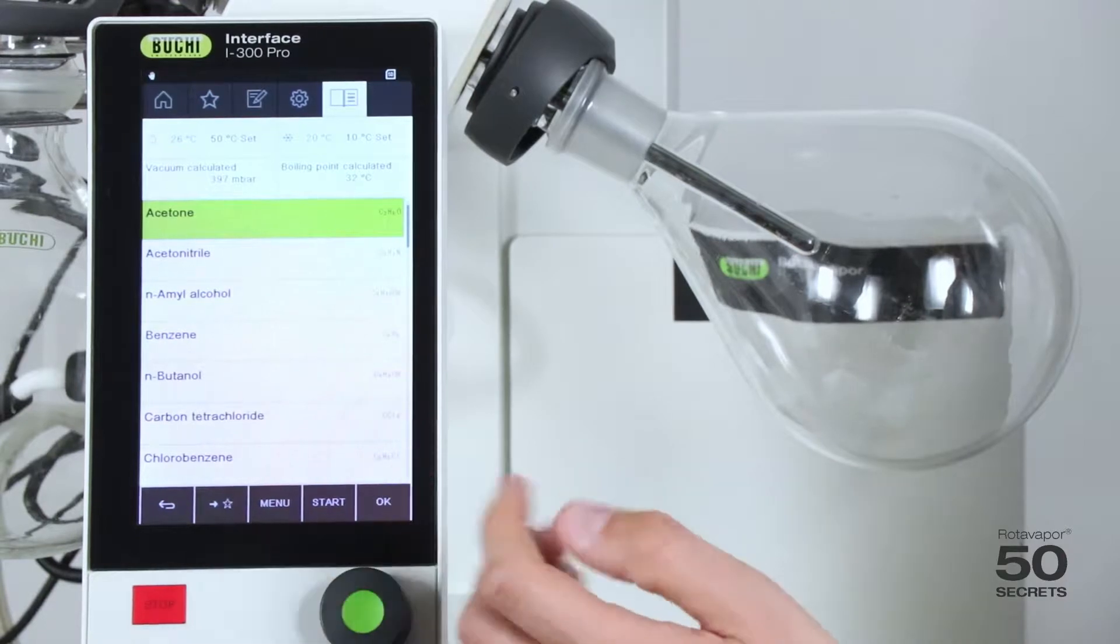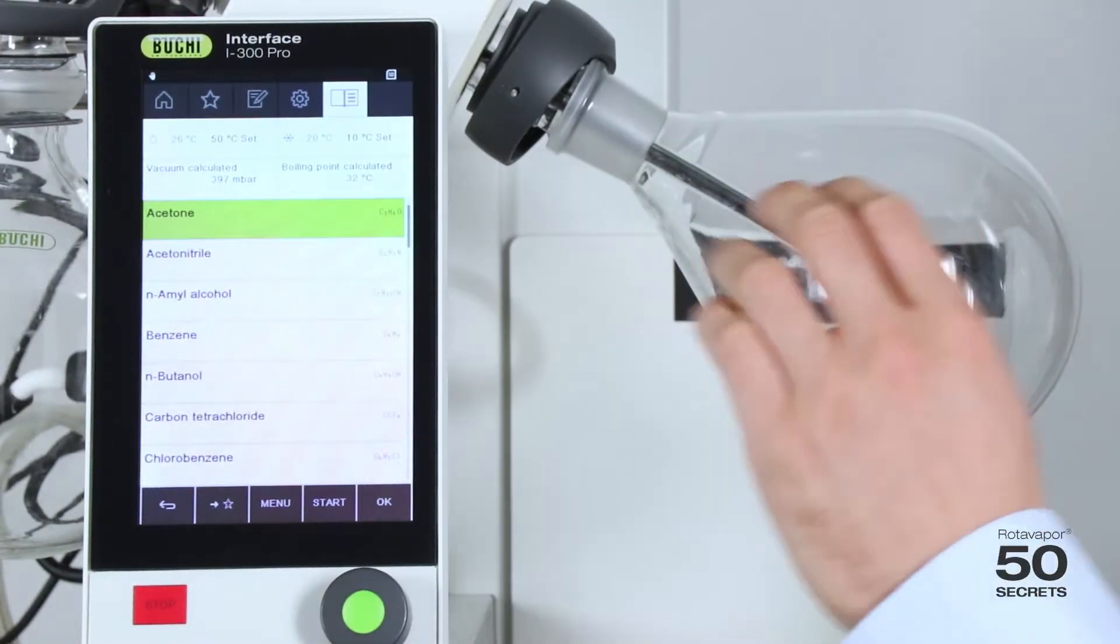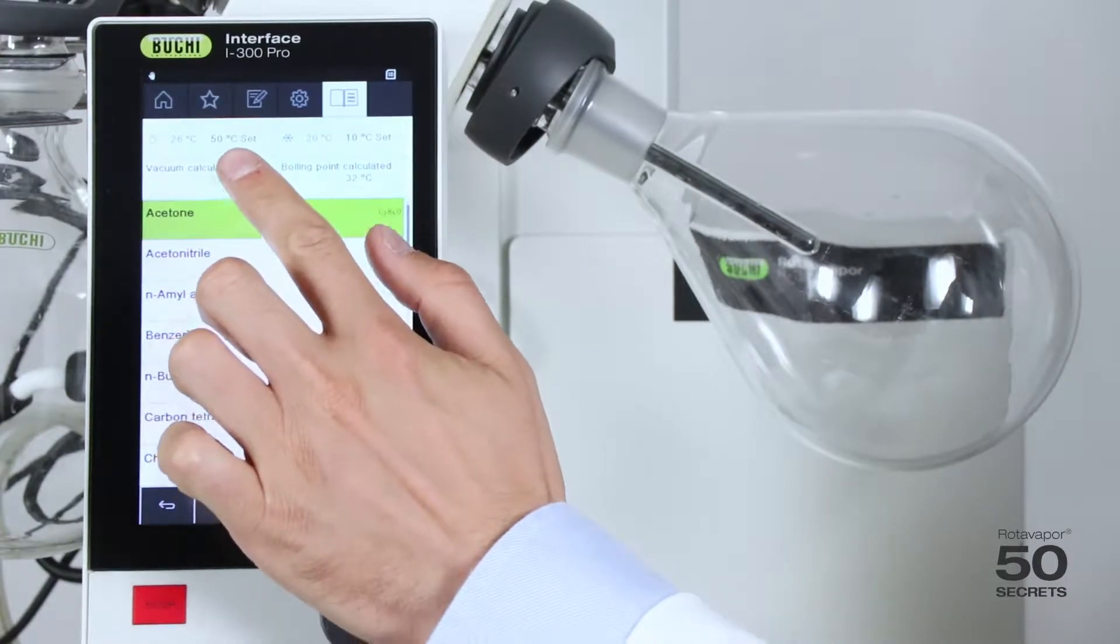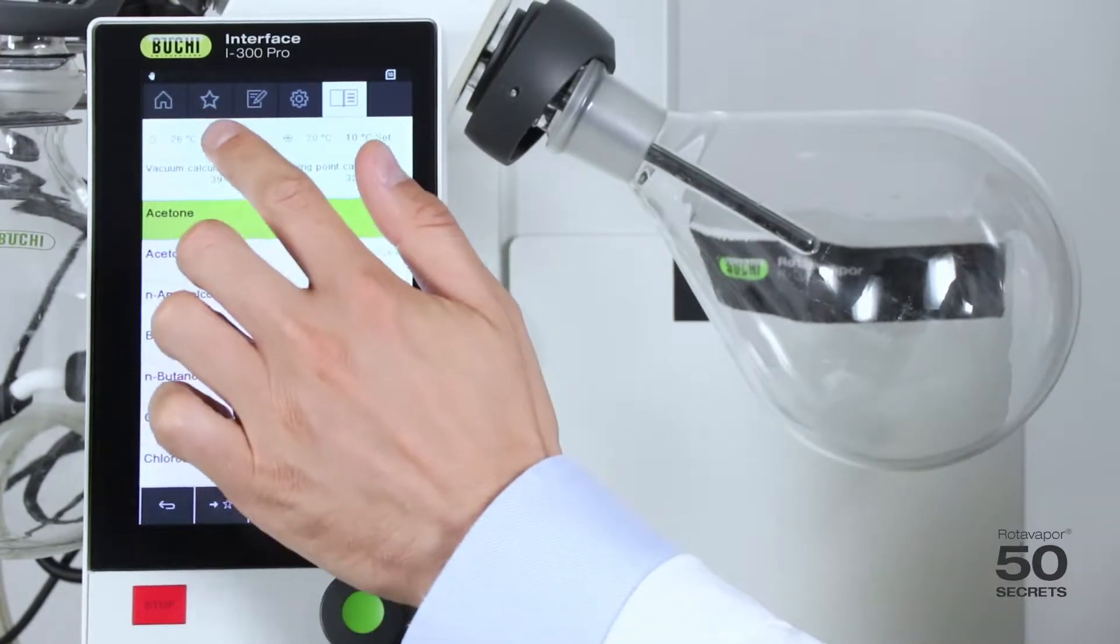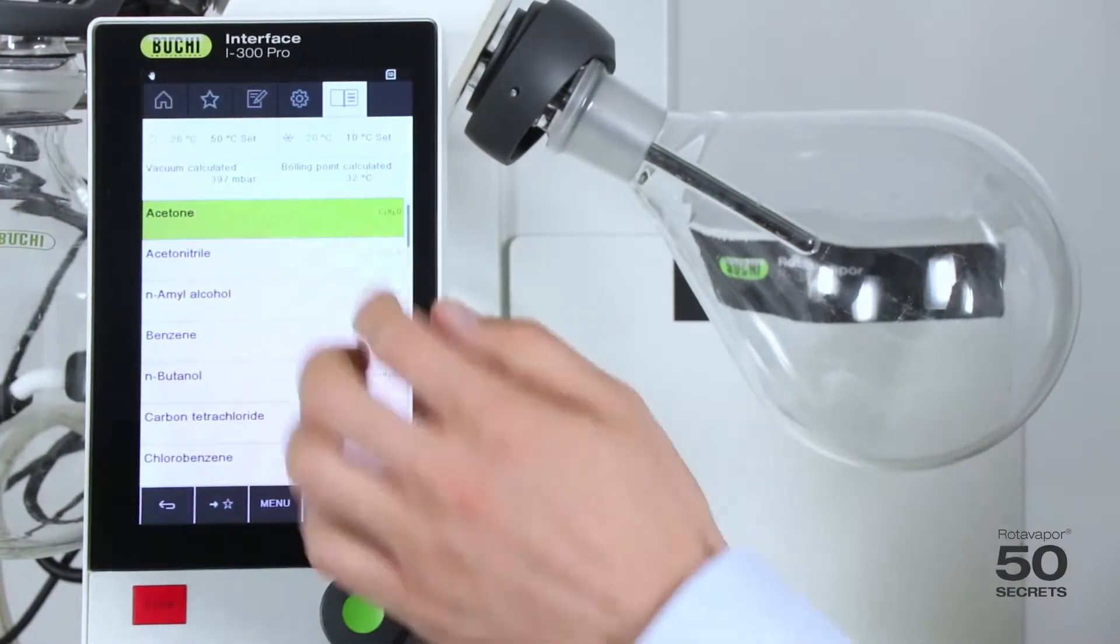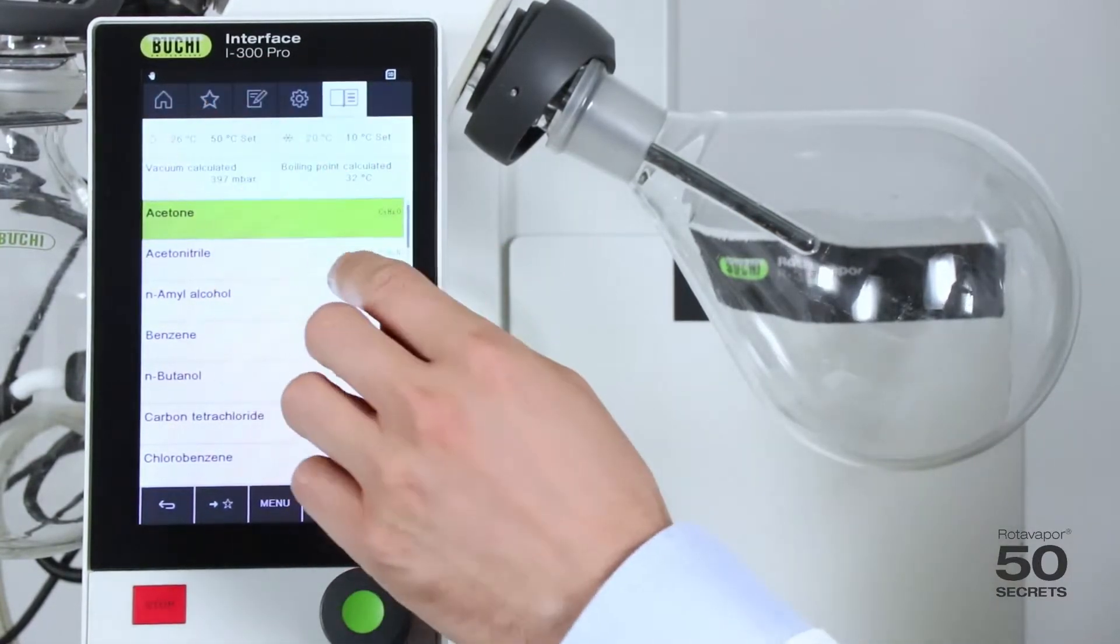Let's have a look at acetone for example. First we look at these two numbers over here. One is the heating bath temperature which is taken from the heating bath directly. So if the set temperature of the heating bath is 50 degrees it shows 50 degrees.